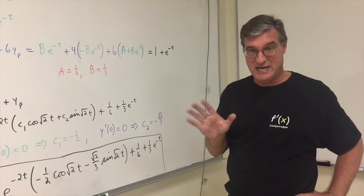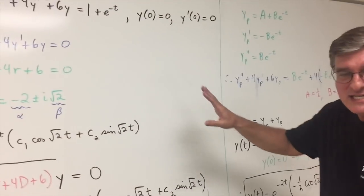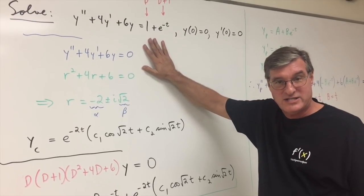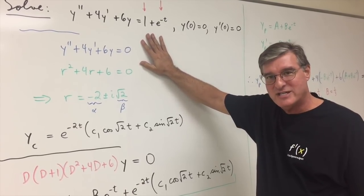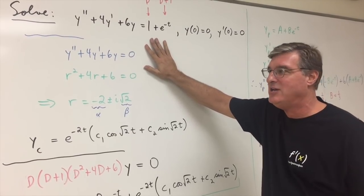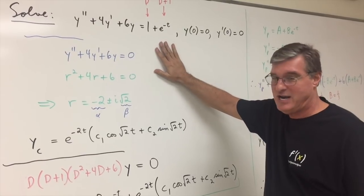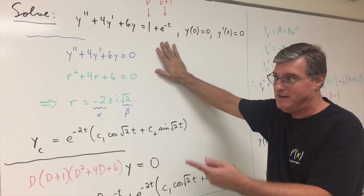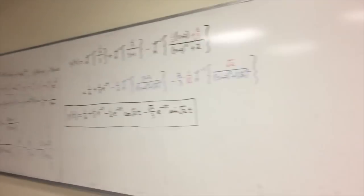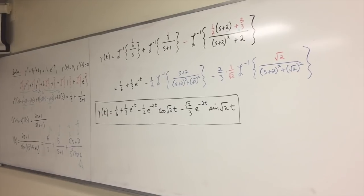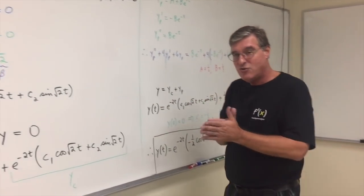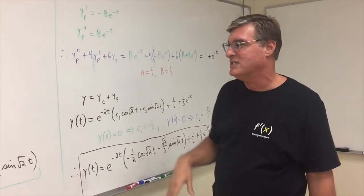That's a good method because what happens if your function on the right-hand side is like secant t, or the square root of 1 plus x squared, or tangent t, ln t, you know, something like that. See, now you've got to try and use variation of parameters on that because we don't know what's going to happen with Laplace transform on those. We don't know what's going to happen here on undetermined coefficients.